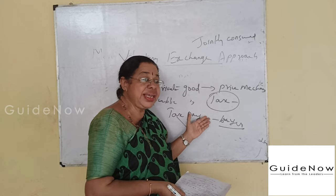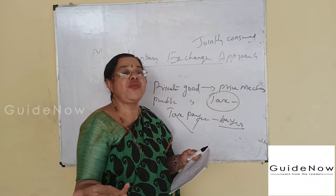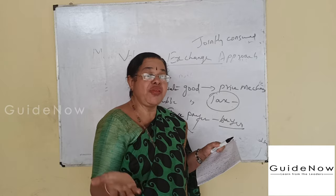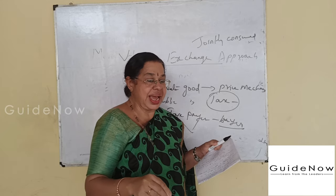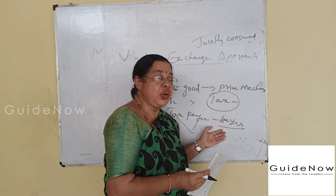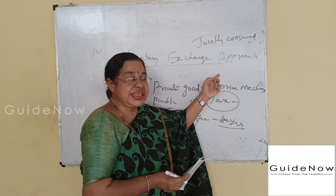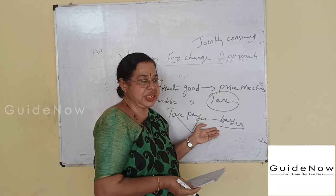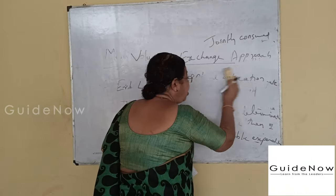The problem existing in the distribution of public goods was addressed to a certain extent through the clear statement of Eric Lindahl, developed by Johnson and Bowen, and further explained by Musgrave and Samuelson. Voluntary exchange means buying and selling: buying public goods through taxation, and purchasing private goods through the price or market mechanism. This is the voluntary exchange approach, which can solve the problem of providing public goods through the introduction of the tax system.